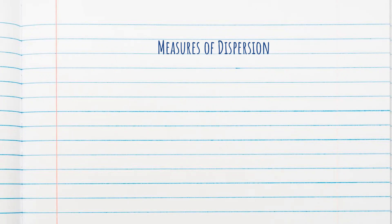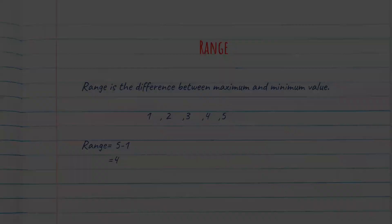Dispersion, which is nothing but variability of data, which is nothing but spread of the data. So here we will try to understand about range, variance and standard deviation.